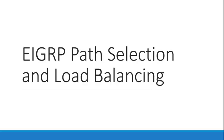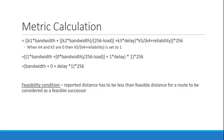Here we're going to look at EIGRP path selection and load balancing. The first part we want to look at is the actual metric calculation — what is the calculation, and how does it end up defaulting to bandwidth and delay? I have seven routers set up, and we'll look at metrics, K-values, equal cost load balancing, and unequal cost load balancing.